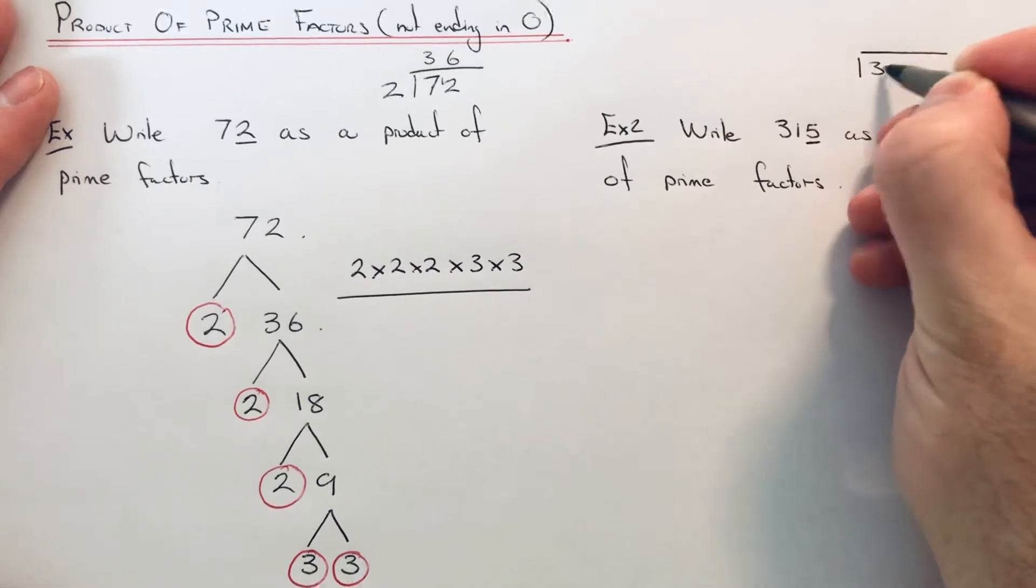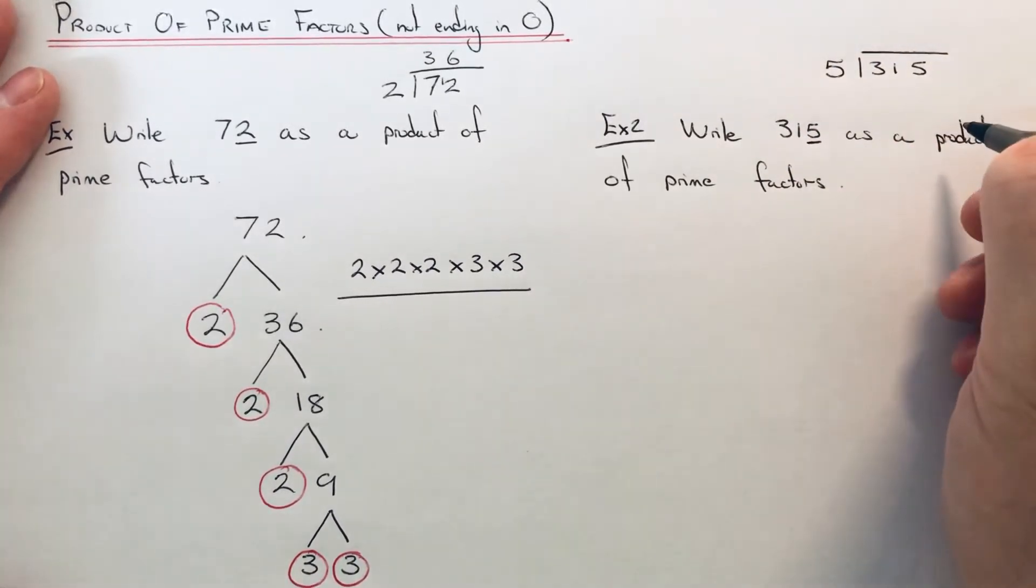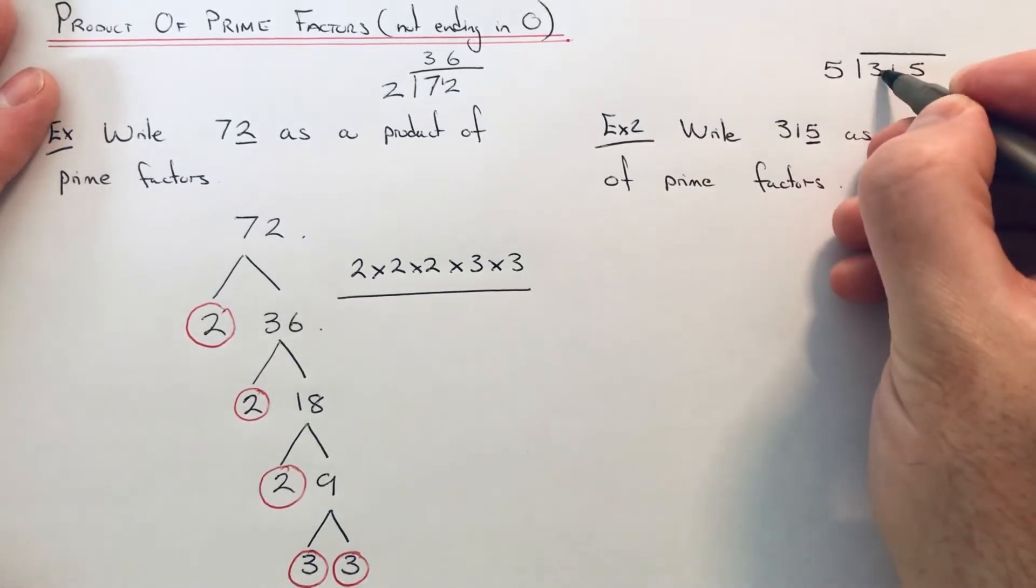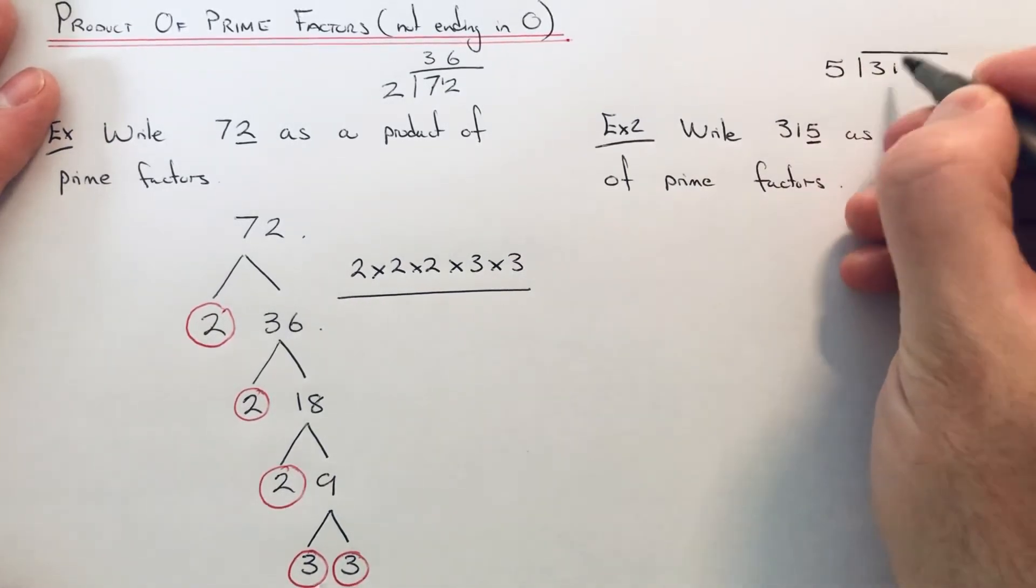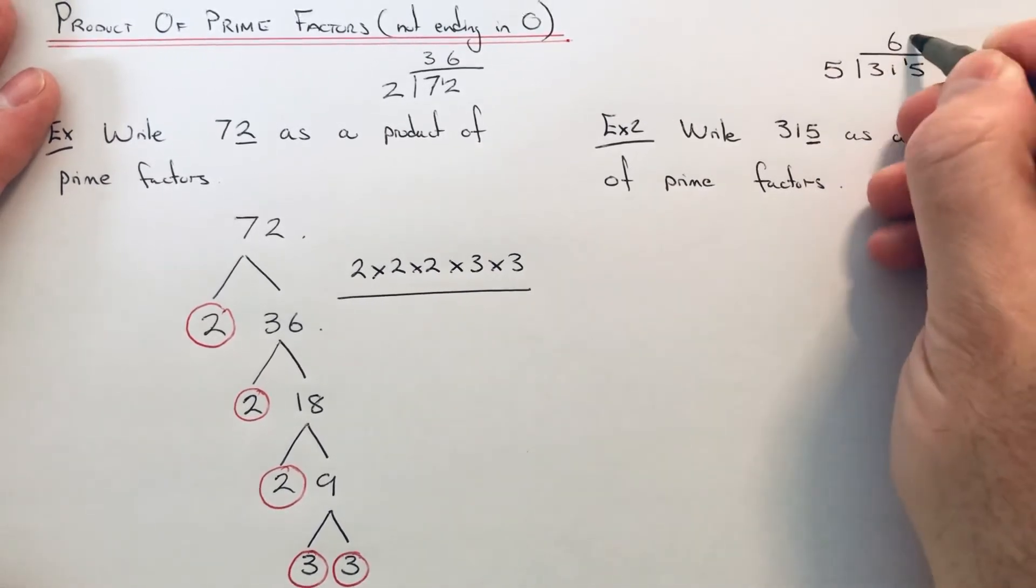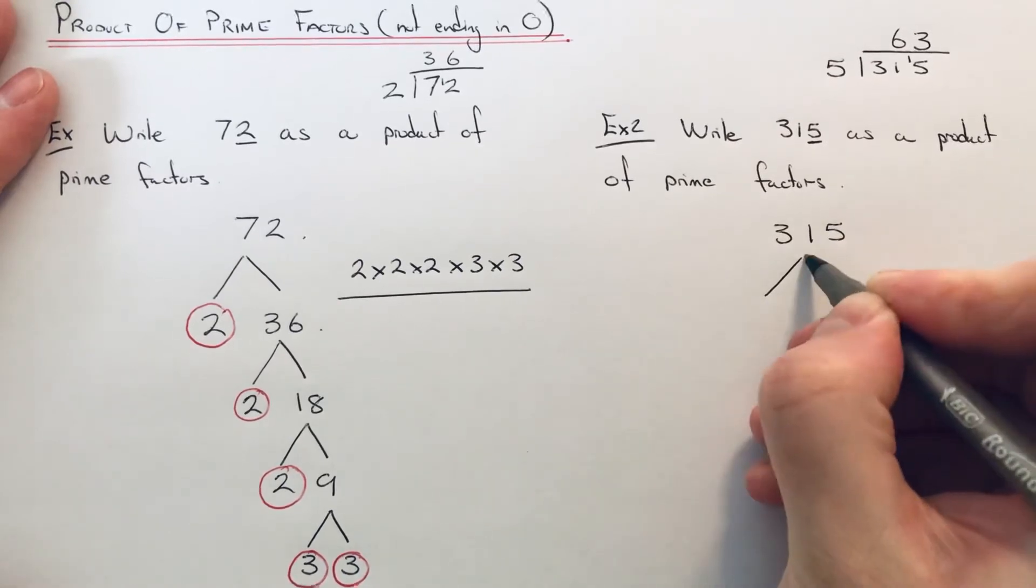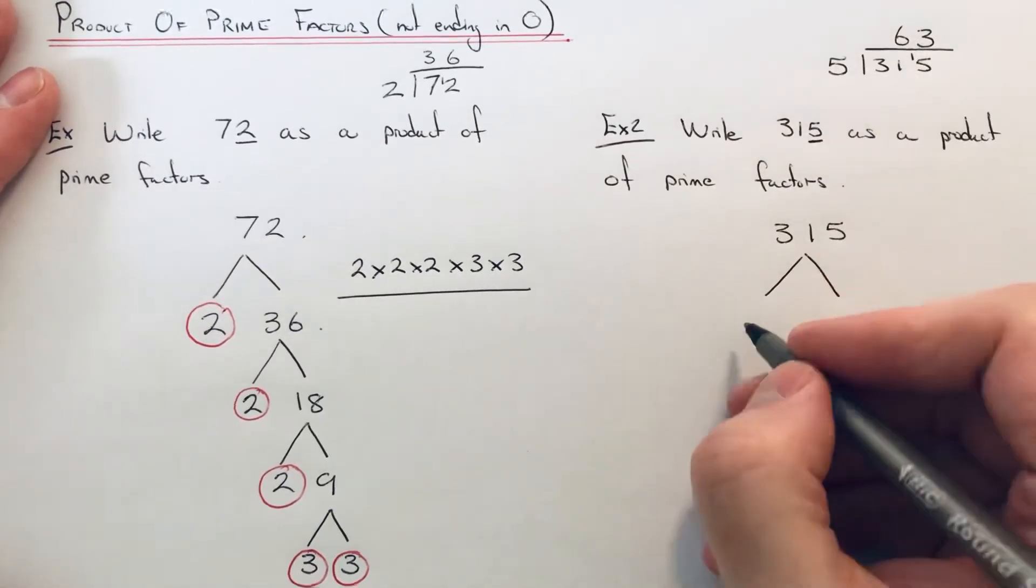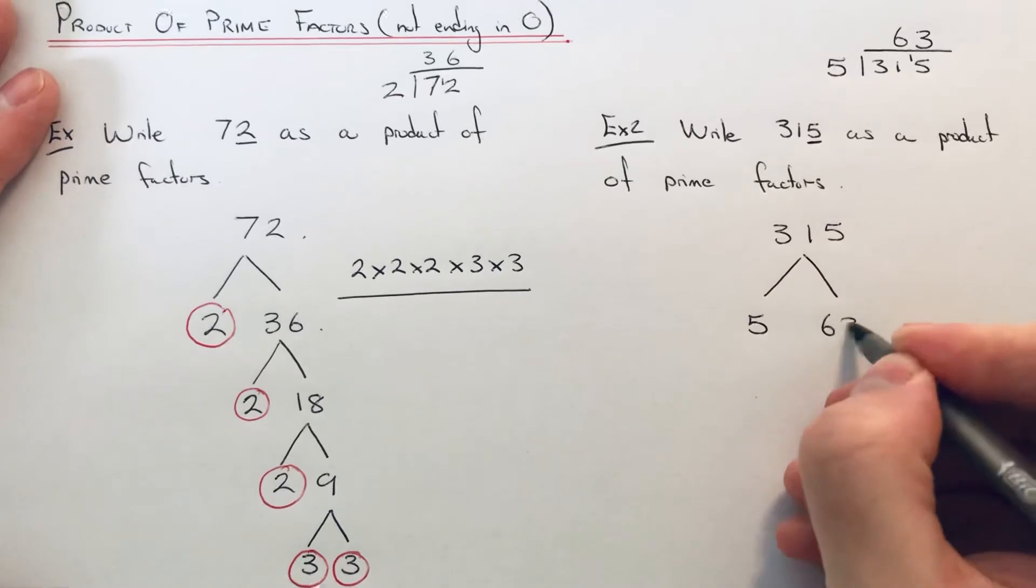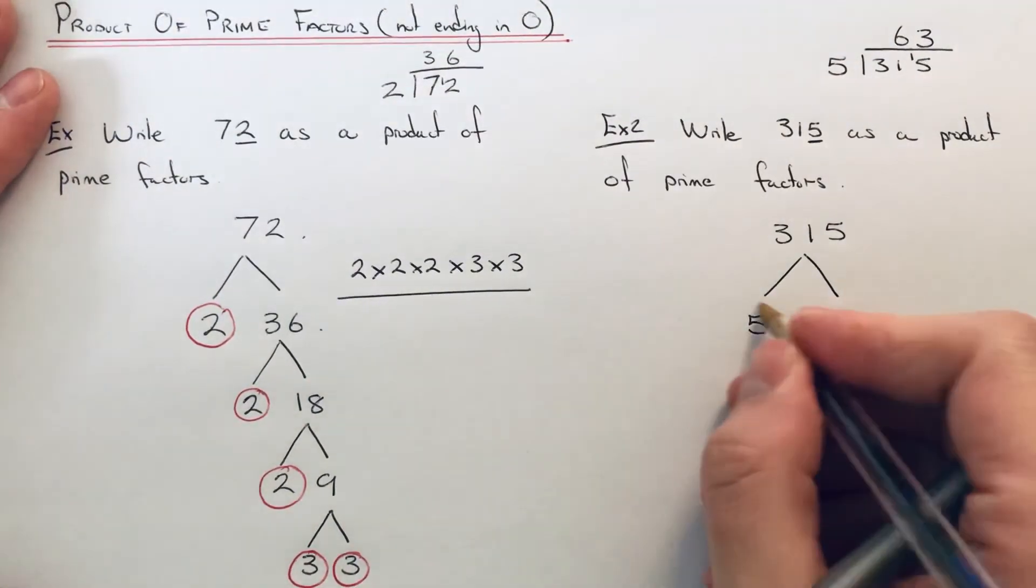Let's divide that by 5 to work out how many times it goes into 315. 5s into 3 don't go, 5s into 31 goes 6 remainder 1, 15 divided by 5 is 3. So we can split 315 into 5 times 63. 5 is a prime number.